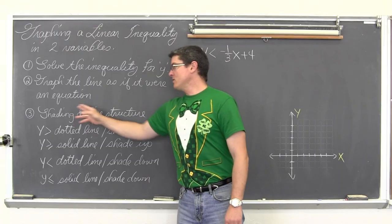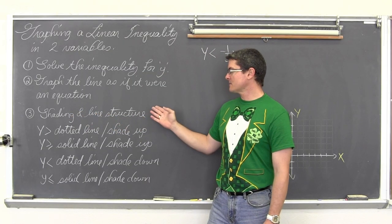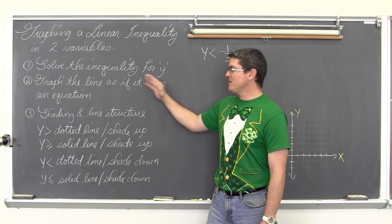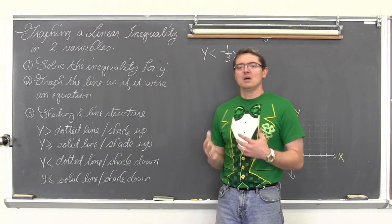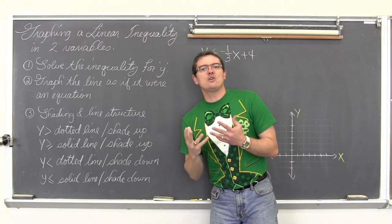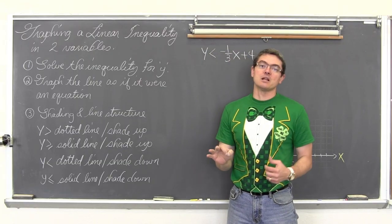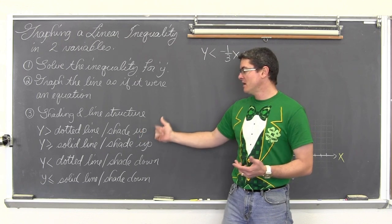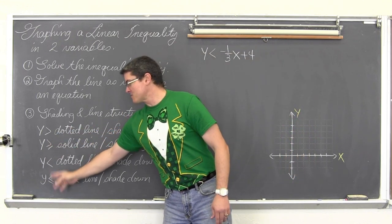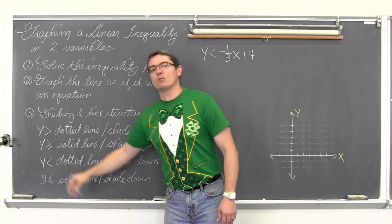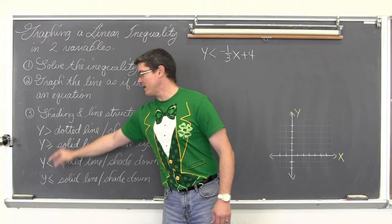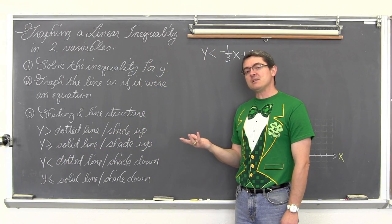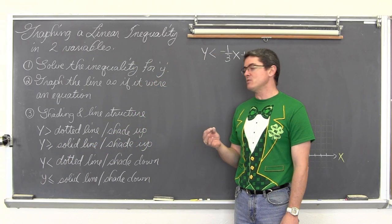Then we are going to shade and talk about the line structure. Steps 2 and 3 kind of go together, because when you graph equations, every graph is a solid line. But when you graph inequalities, you may have an equal sign as part of your inequality, or you may not — where it is just greater than or less than. That means sometimes you have a dotted line and sometimes you don't.